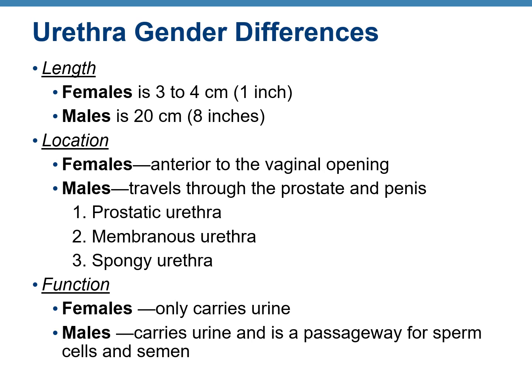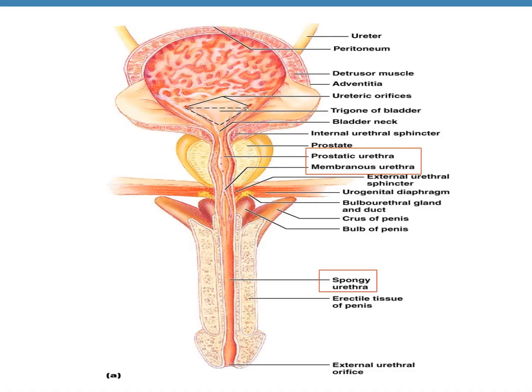Functionally, in females the urethra is used only to carry urine, but in males the urethra carries both urine and semen. This figure shows the male urethra with its three regions: the prostatic urethra, membranous urethra, and spongy or penile urethra.